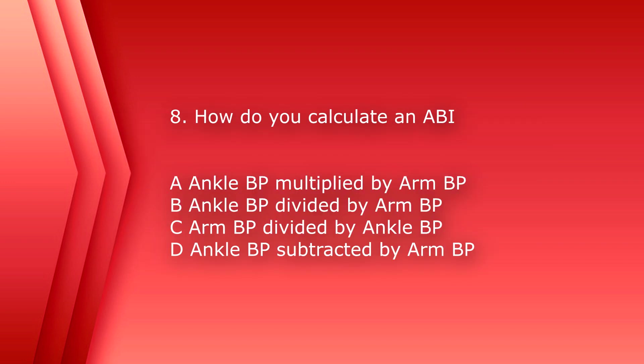Number eight. How do you calculate an ABI, or ankle brachial index? A, ankle blood pressure multiplied by arm blood pressure. B, ankle blood pressure divided by arm blood pressure. C, arm blood pressure divided by ankle blood pressure. D, ankle blood pressure subtracted by arm blood pressure.